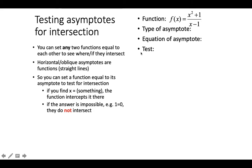First topic: testing the asymptotes for intersections. Given a function, we determine whether it has a horizontal or oblique asymptote. Since the power in the numerator is one more than the denominator, this function has an oblique asymptote. Using long division, we find the oblique asymptote is y = x + 1.